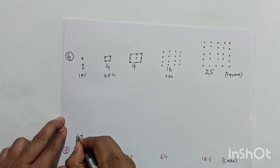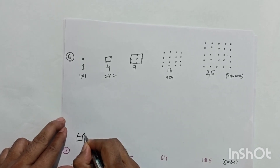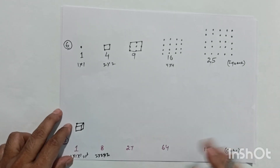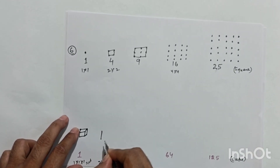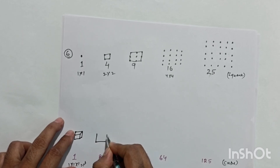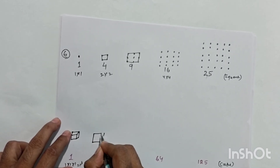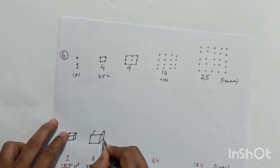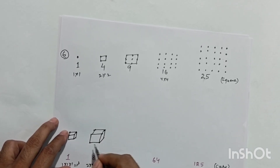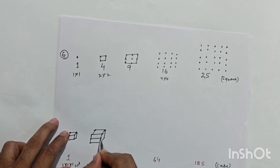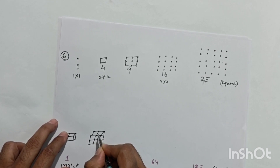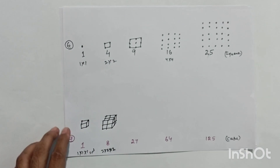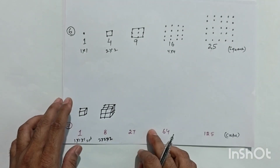To draw the cube for 1, we first create one square and then add depth to form a cube. For 8 = 2×2×2, we draw a slightly larger cube and divide each side into two equal parts. When measuring carefully, this creates a perfect cube divided into 8 smaller cubes.